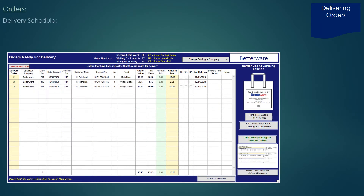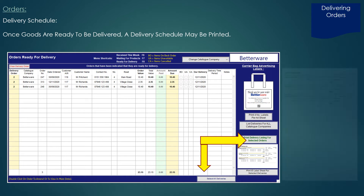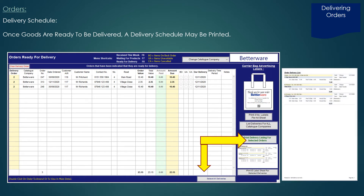Once you have bagged up all your orders ready for delivery, you can print a delivery schedule or manifest. This is printed onto an A4 piece of paper indicating the addresses you need to deliver to and the amount to be collected. You can then indicate against this sheet how the customer has paid — whether by card, cash, cheque, or bank transfer.